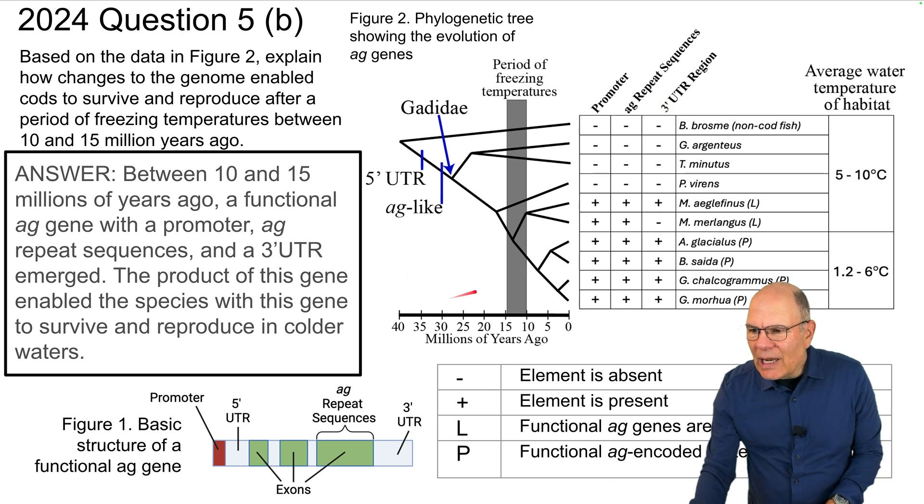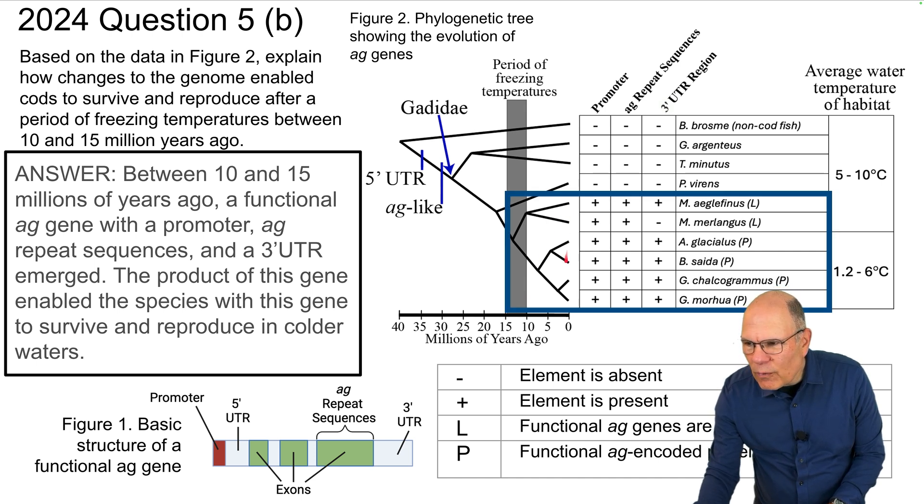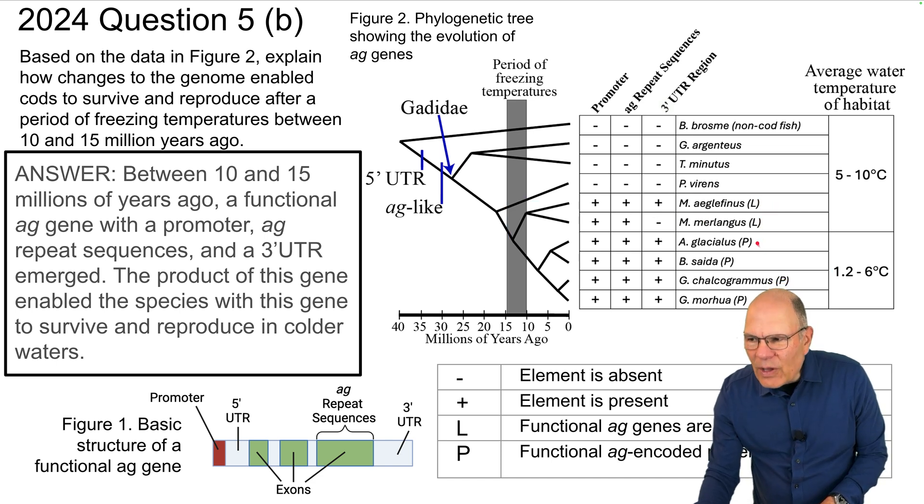And you can see that here's 10 and 15 million years ago. And after that period, you have these one, two, three, four, five, six species have these elements, but it was lost in these two over here. And these four species over here are the ones that can survive in very cold water between 1.2 and six degrees Celsius.